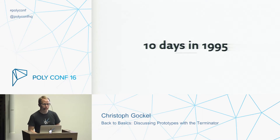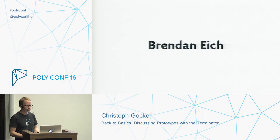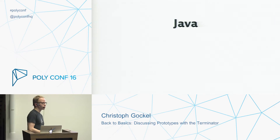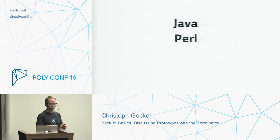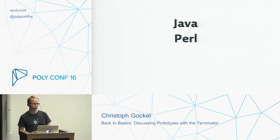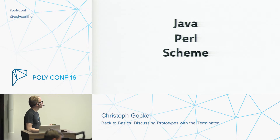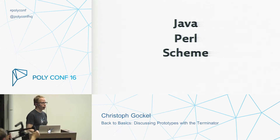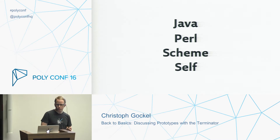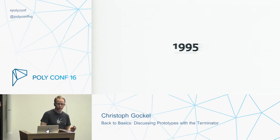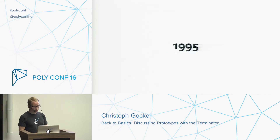JavaScript was invented in 10 days back in 1995 by Brendan Eich, who later co-founded Mozilla. It got a lot of inspiration from different languages. Syntax comes from Java. Perl influenced string and array handling as well as regular expressions. Thanks to Scheme we have functions as first-class citizens. And from Self we got prototypal inheritance. So 1995 — that's 21 years now.